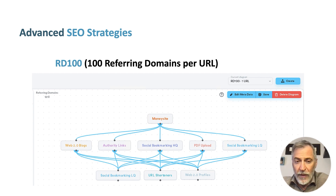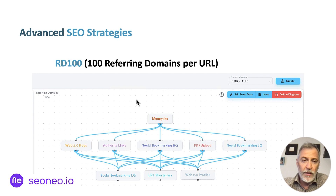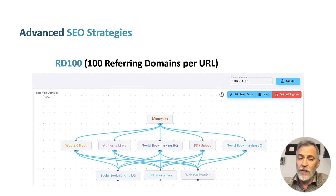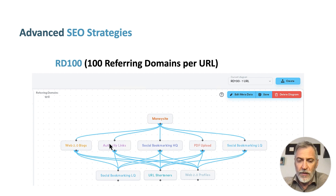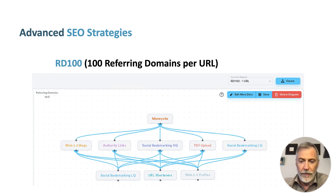The RD100 strategy is available in SEO Neo. As you can see, in the top left corner of the diagram you see the number of referring domains. This specific diagram is only for one URL, but I'm going to create more diagrams for 10, 25, 50, and 100 URLs, so you can apply the RD100 for as many tier ones or URLs as you like. If you take a closer look at the tier one structure, this RD100 diagram grants you at least 160 to 170 referring domains per URL.